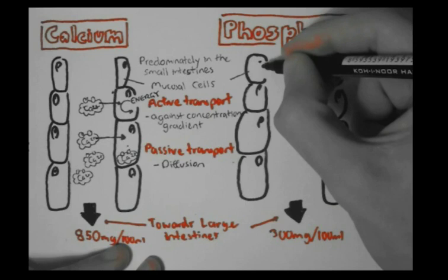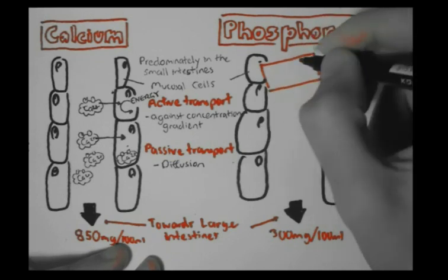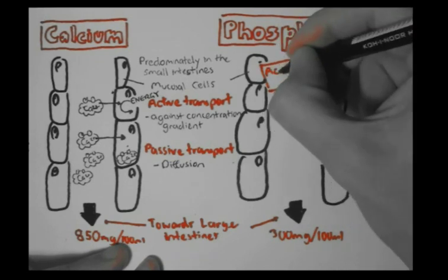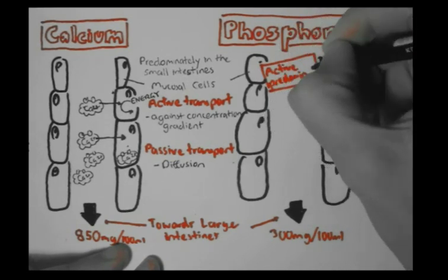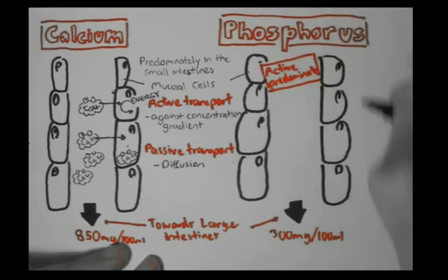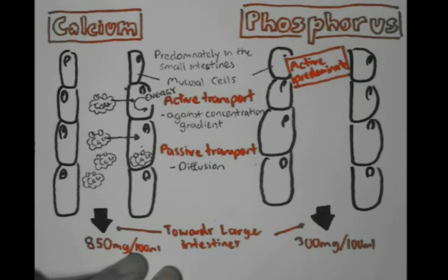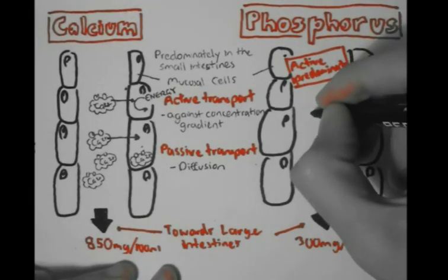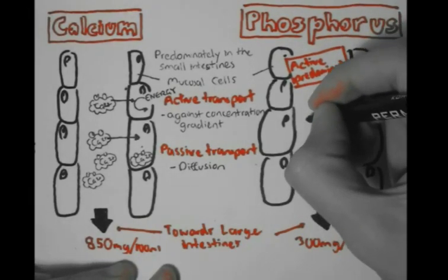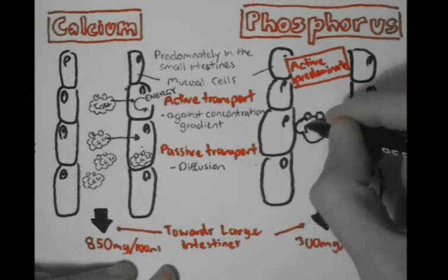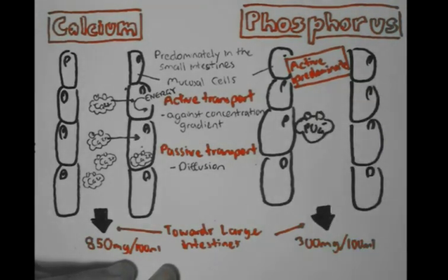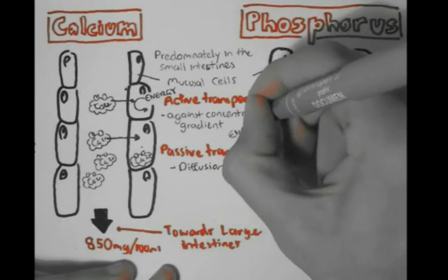Daily, about 300 mg per 100 ml of phosphorus is excreted as feces. Phosphorus is absorbed predominantly by active transport, meaning that if phosphorus wants to get absorbed into the body, it requires energy.